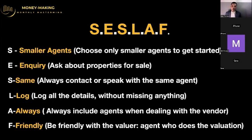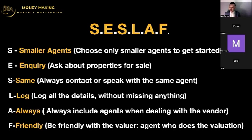The A stands for Always. Always deal with the vendor — your priority number one is to deal with the vendor. Some investors try to negotiate directly with the vendor to cut off the estate agents so they don't pay the commission, but that's a massive mistake. You need to negotiate with the vendor, but continue communicating with and updating the estate agents about what's going on. If you're going to view the property three or four times, you'll have the vendor's number.